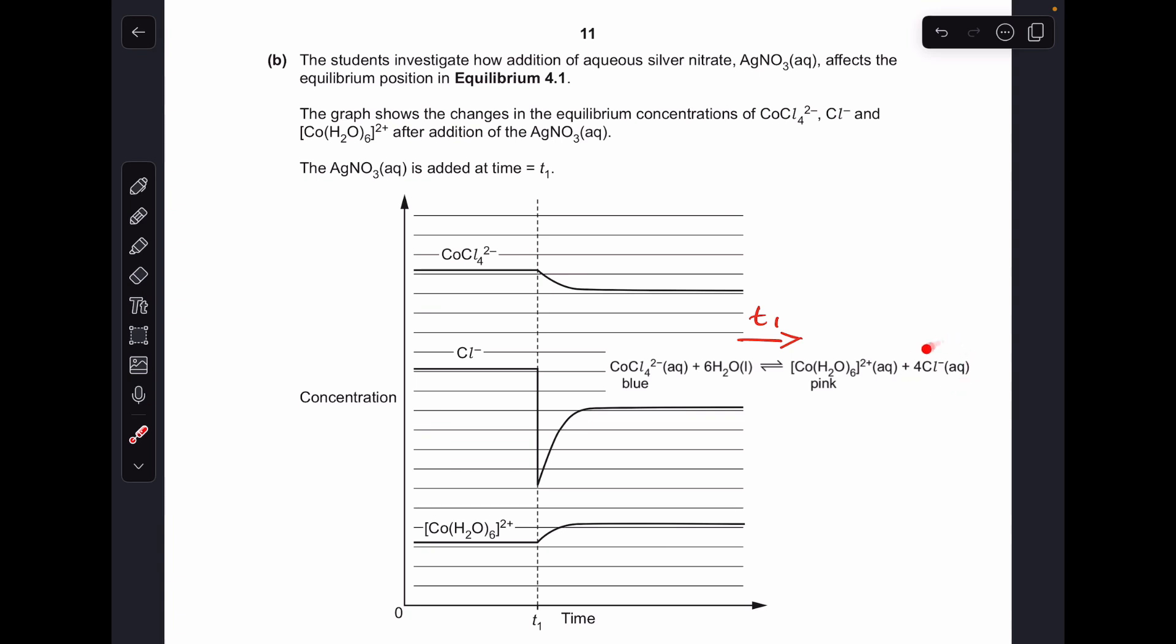If we think about the chloride concentration, equilibrium is going this way, so this is going to go up, but this has gone up significantly more. It's actually gone up four times more if you sort of count the lines it's gone up. So the concentration of chloride ions has increased four times the others, and that's again down to this ratio here. So for every one of those there's four of those.